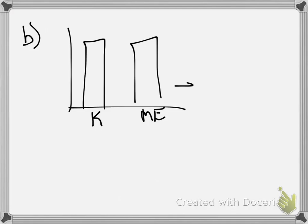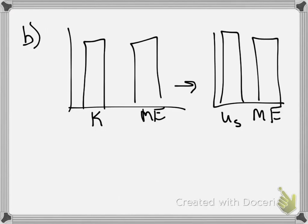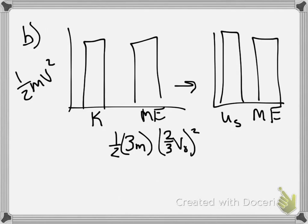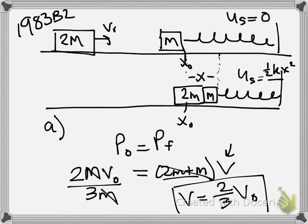So initially, before the spring starts to compress, we have kinetic energy, which is, of course, mechanical, which turns into elastic potential energy, which, of course, is mechanical. So that means our kinetic energy, 1 half times 3M, because that's what's moving, multiplied by the velocity, which was 2 thirds V0 squared, right? 1 half mass times velocity squared is our kinetic energy. Our mass is totally 3M. Our velocity was 2 thirds V0.